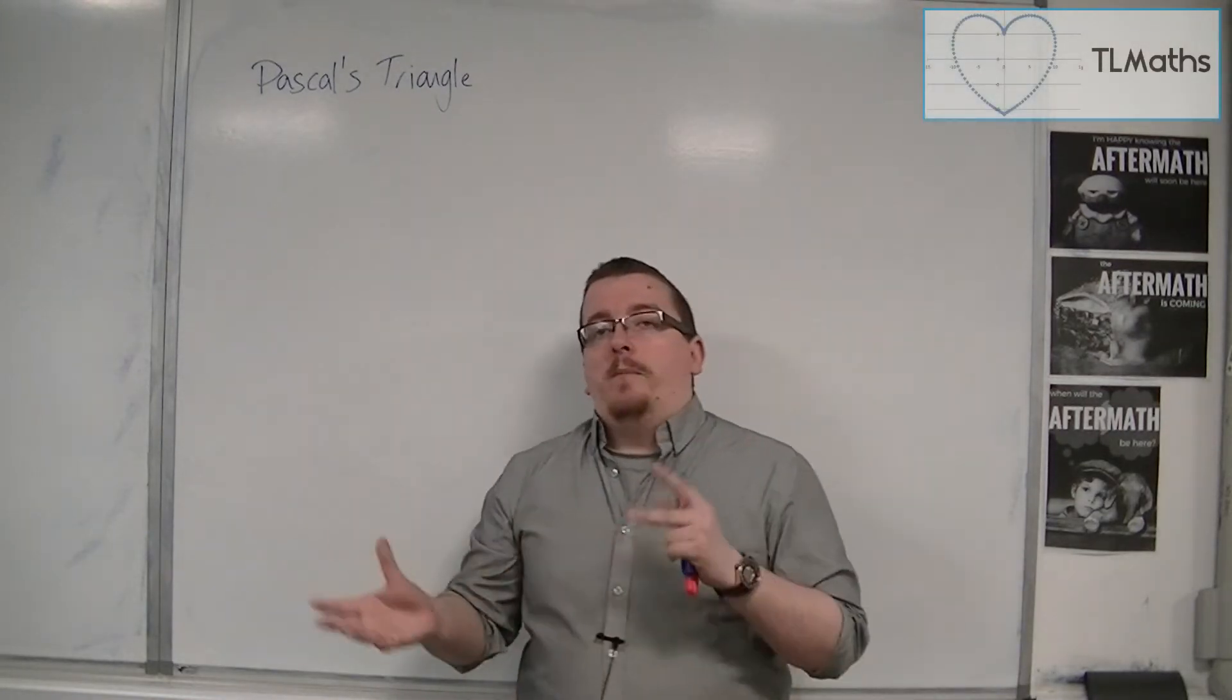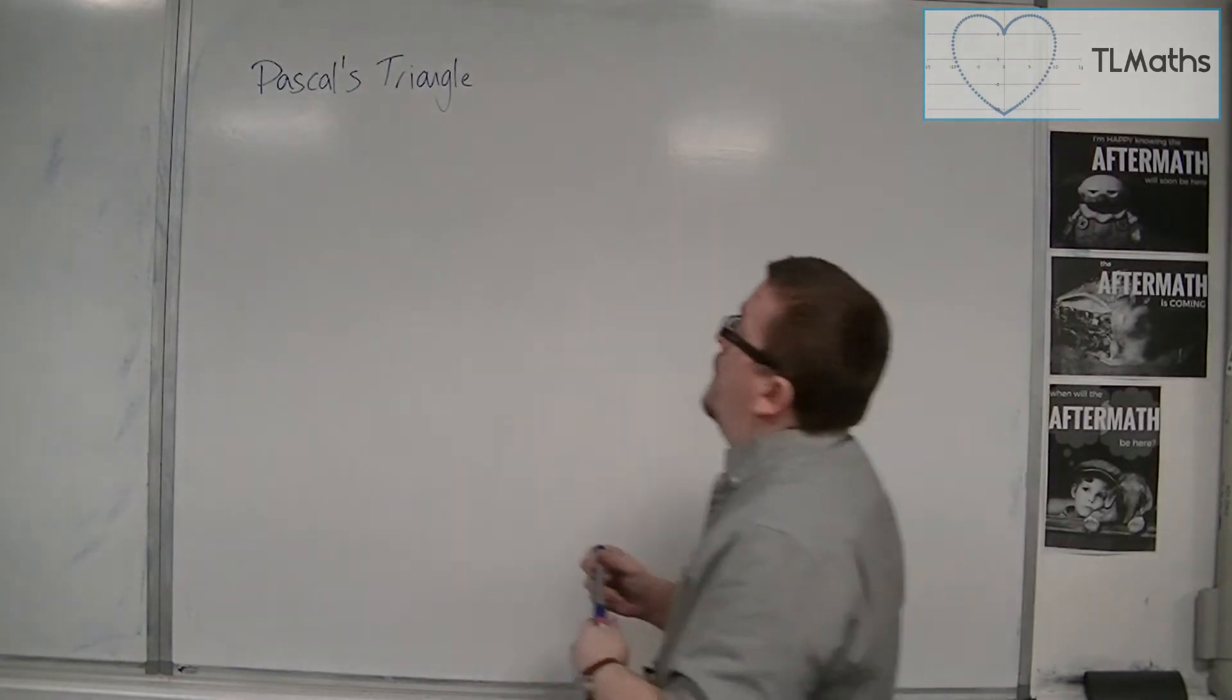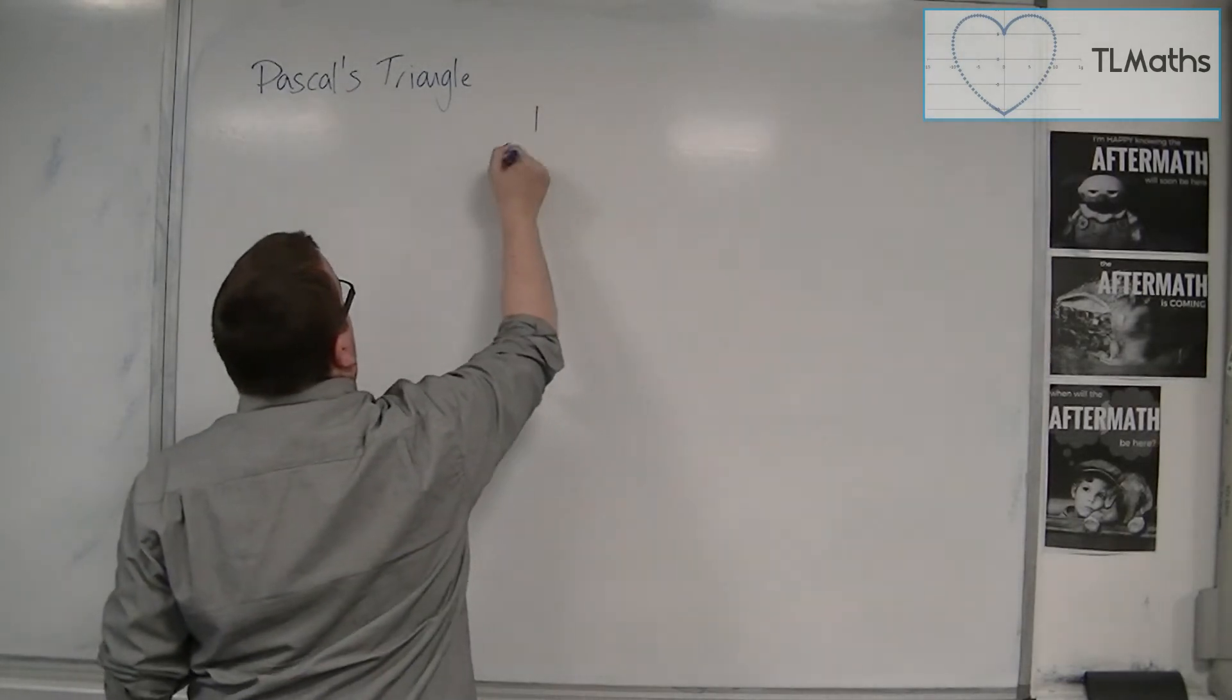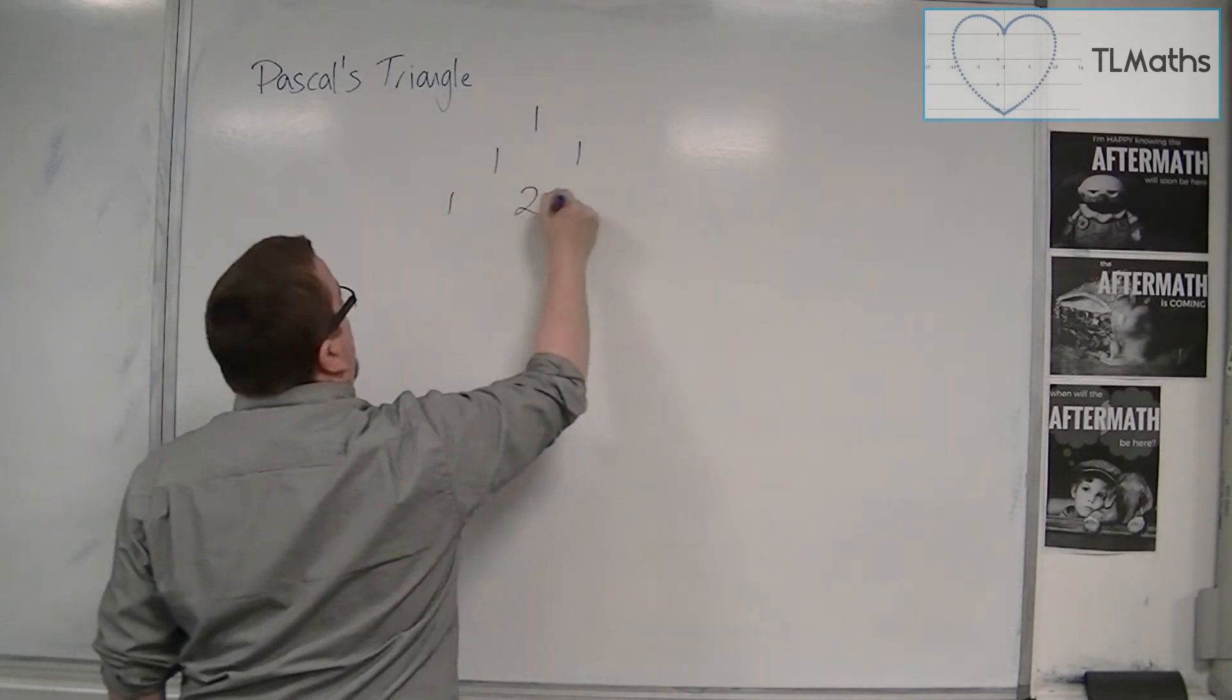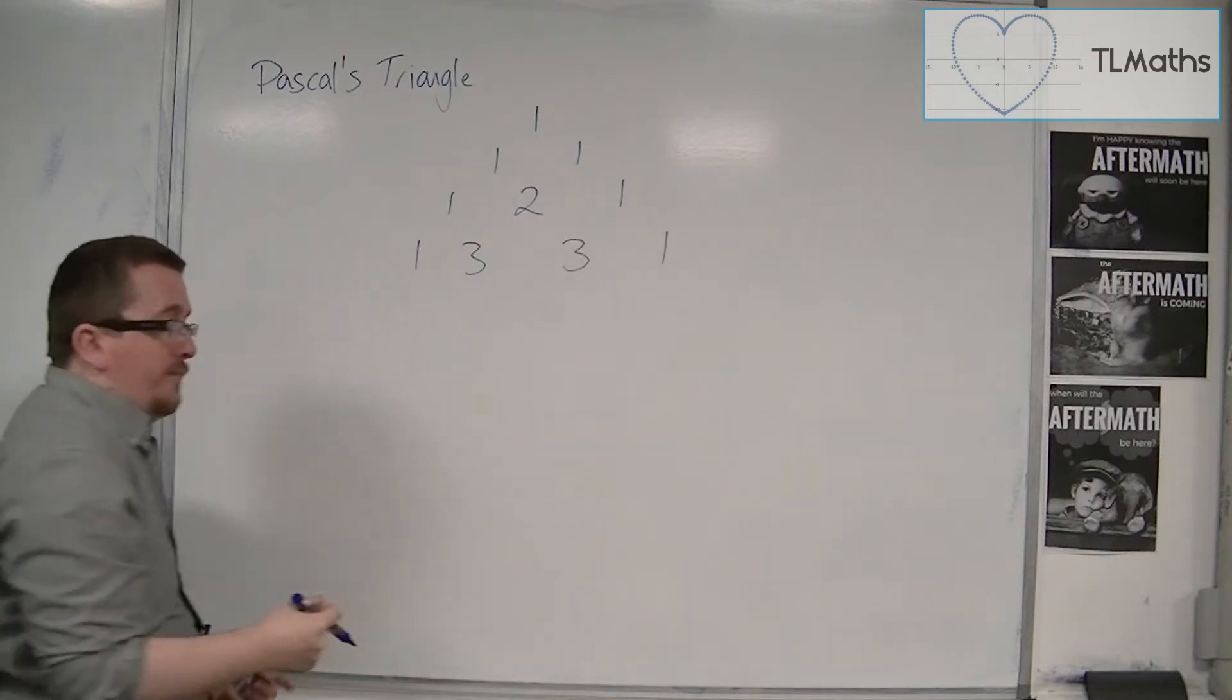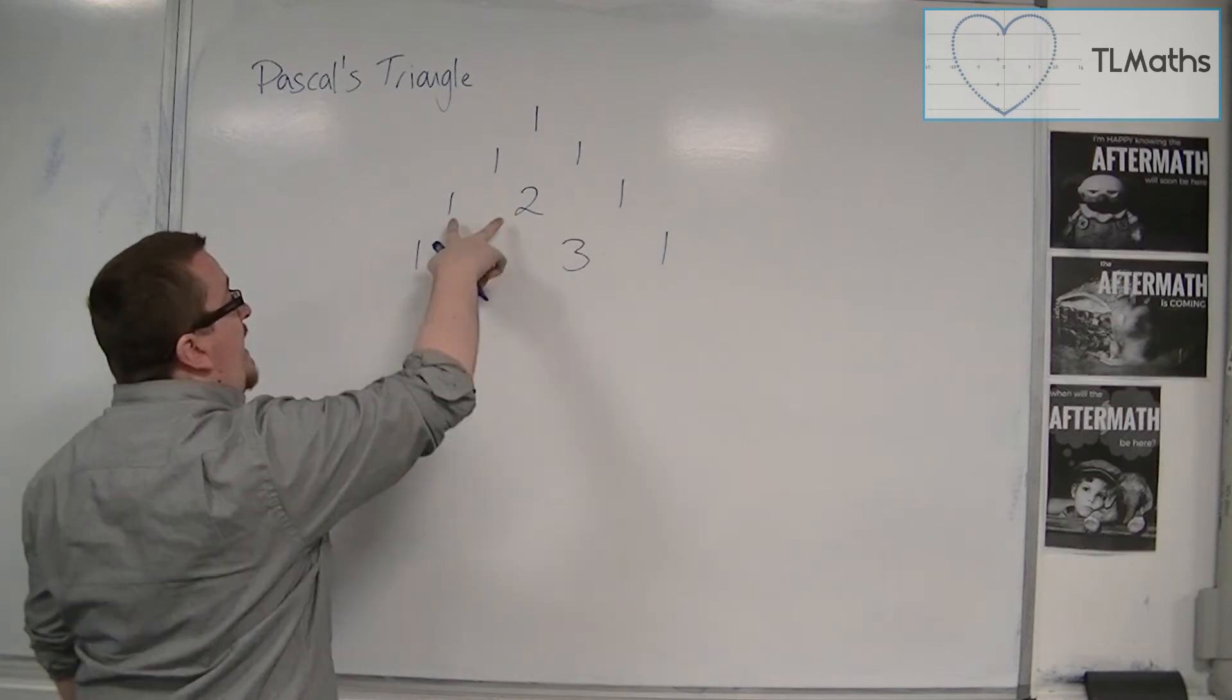So Pascal's triangle starts off with a 1 in the top and then followed by two 1s. And then as you build up, these numbers come from adding the top two previous 1s together.